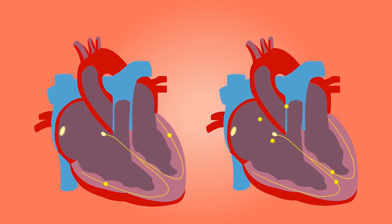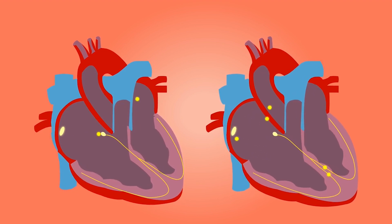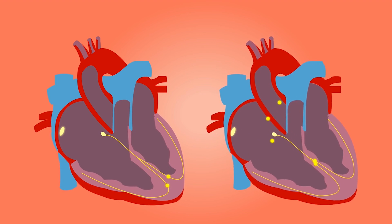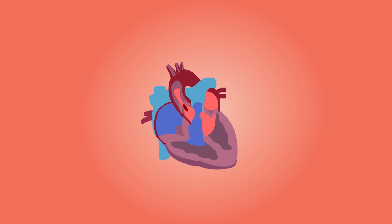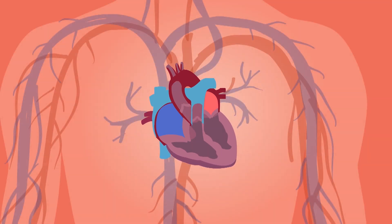In atrial fibrillation, as shown on the right side of the screen, the irregular heartbeat originates from the left upper chamber of the heart and is completely irregular and generally fast. This pattern of heartbeat has serious complications. Firstly, clot formation in the heart, and this is due to inefficiency of the blood circulating through the heart and stagnation of blood in the left upper part of the heart.